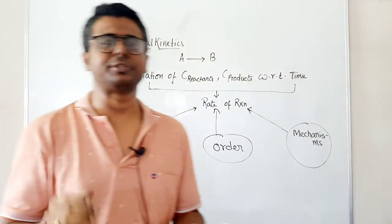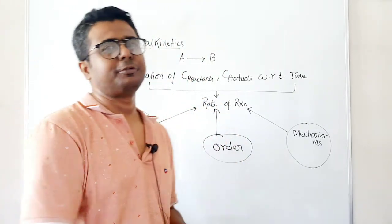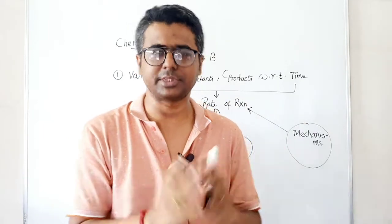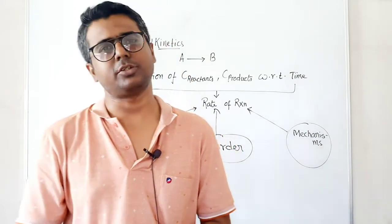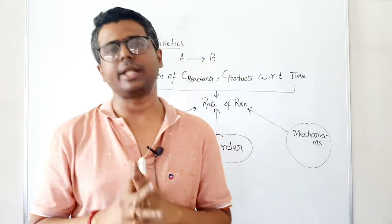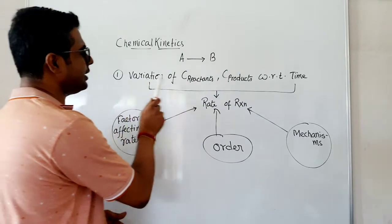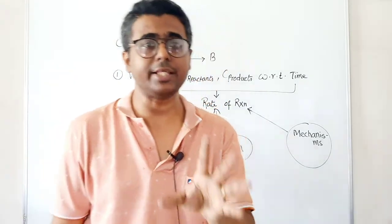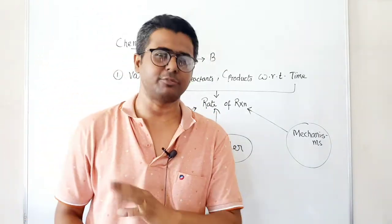Today we are going to start a new chapter called chemical kinetics. Chemical kinetics is a small part of a very big branch called chemical reaction engineering. Chemical kinetics studies the variation of concentration of reactants and products with respect to time.